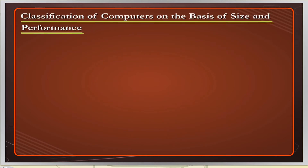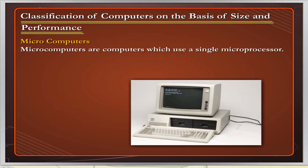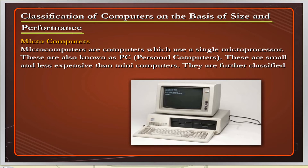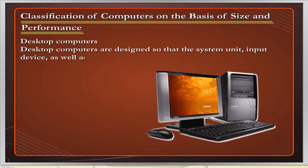Classification of Computers on the basis of size and performance. Microcomputers are computers which use a single microprocessor. These are also known as PCs, or personal computers. They are small and less expensive than mini computers. They are further classified into Desktop Computers and Portable Computers. Desktop Computers are designed so that the system unit, input device, and output unit can be placed on a desk.